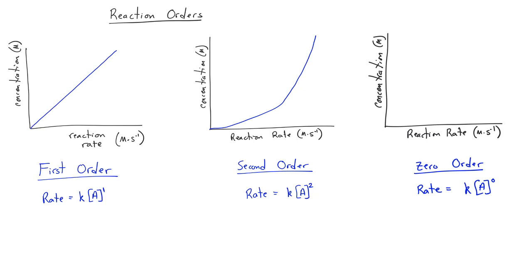If the order is 0, that means that the value of A is raised to the zeroth power. Anything raised to the 0 power is equal to 1. So in this case, the rate is equal to the rate constant K. For a zero order reaction, a concentration versus rate graph would be completely flat because the reaction rate is not at all dependent upon the concentration of the reactants.